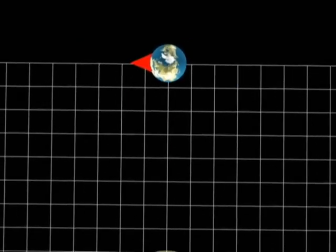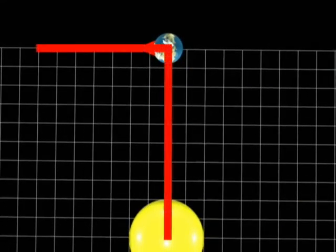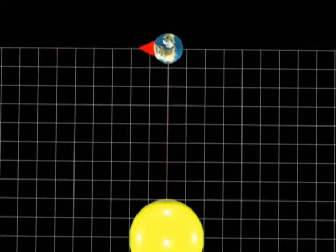At the start, the red point is pointed at a grid line and it's at a right angle to the Sun. This would be sunrise for that point on Earth.